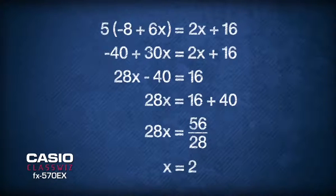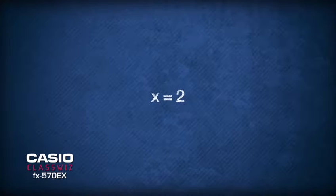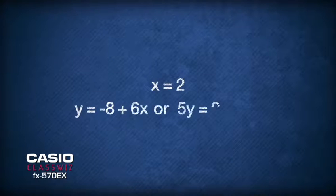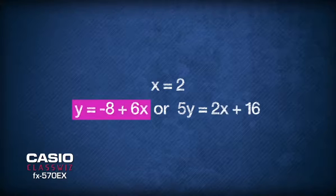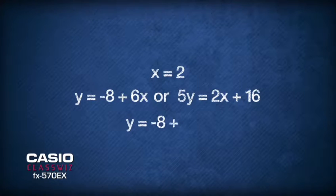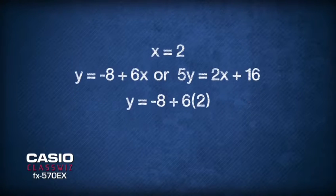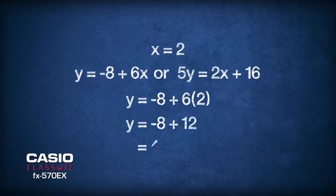Now that we have found the x-coordinate of the point of intersection, we can then substitute x equals 2 into the equation of either y equals negative 8 plus 6x or 5y equals 2x plus 16. It is easier to substitute x equals 2 into the equation of y equals negative 8 plus 6x. After substitution, we get y equals negative 8 plus 6 times 2, which then solves y equals 4.